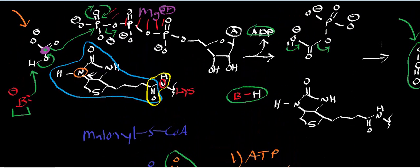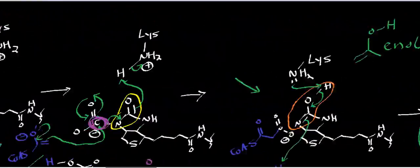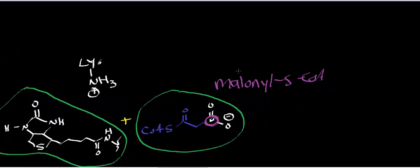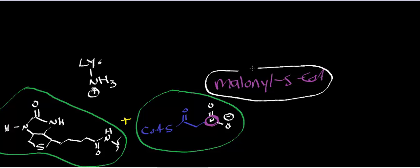In another video, we'll look at the regulation of this enzyme — it's an allosteric enzyme. Now, one important thing to leave you with: this malonyl-CoA we generated is an extremely important molecule. As mentioned in the first video in this playlist, it's important because it's used in fatty acid biosynthesis. All fatty acids are going to require malonyl-CoA to build them up from acetyl-CoA.